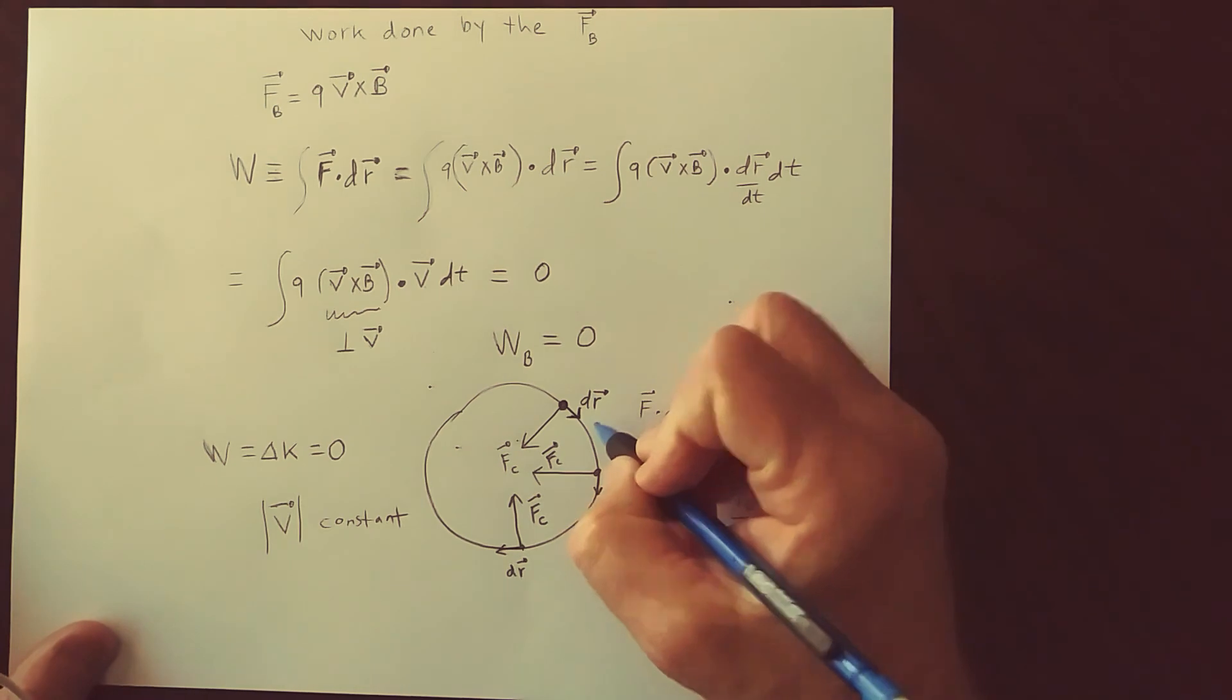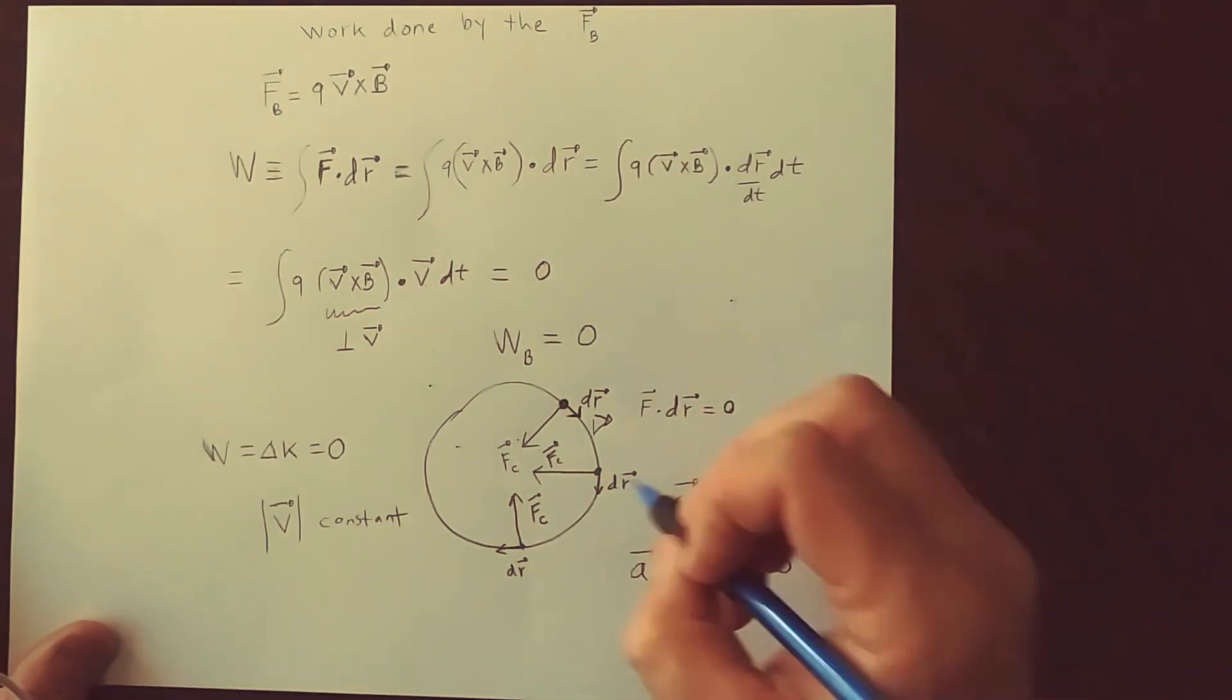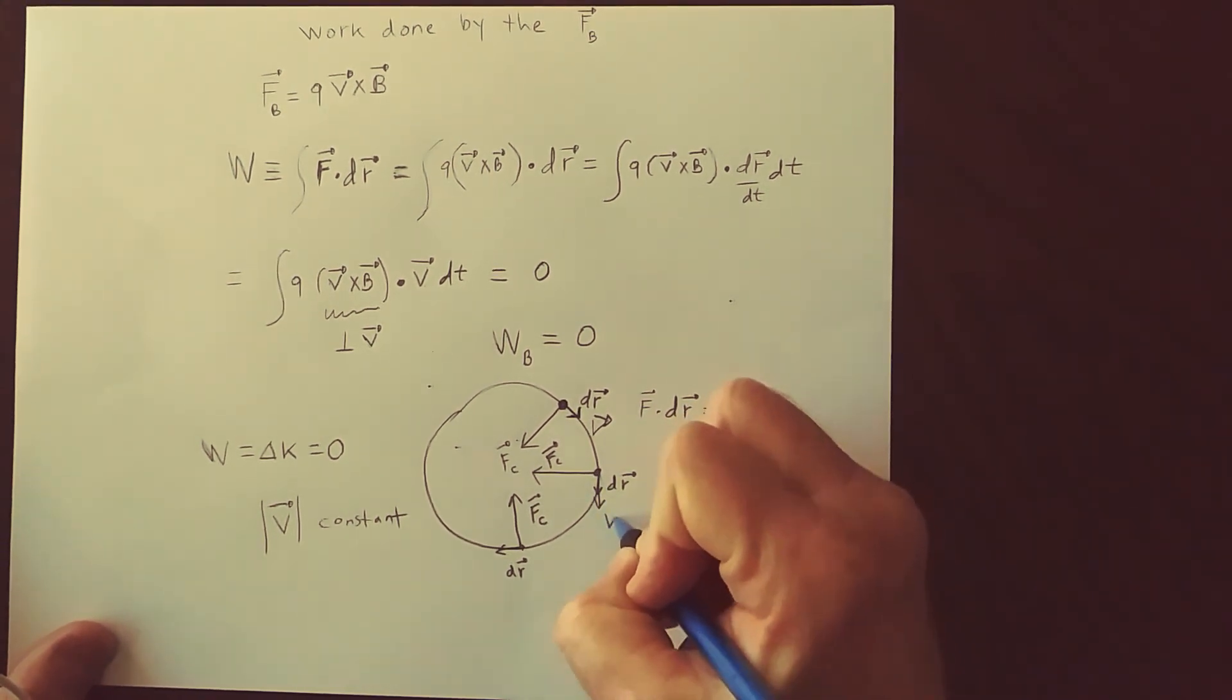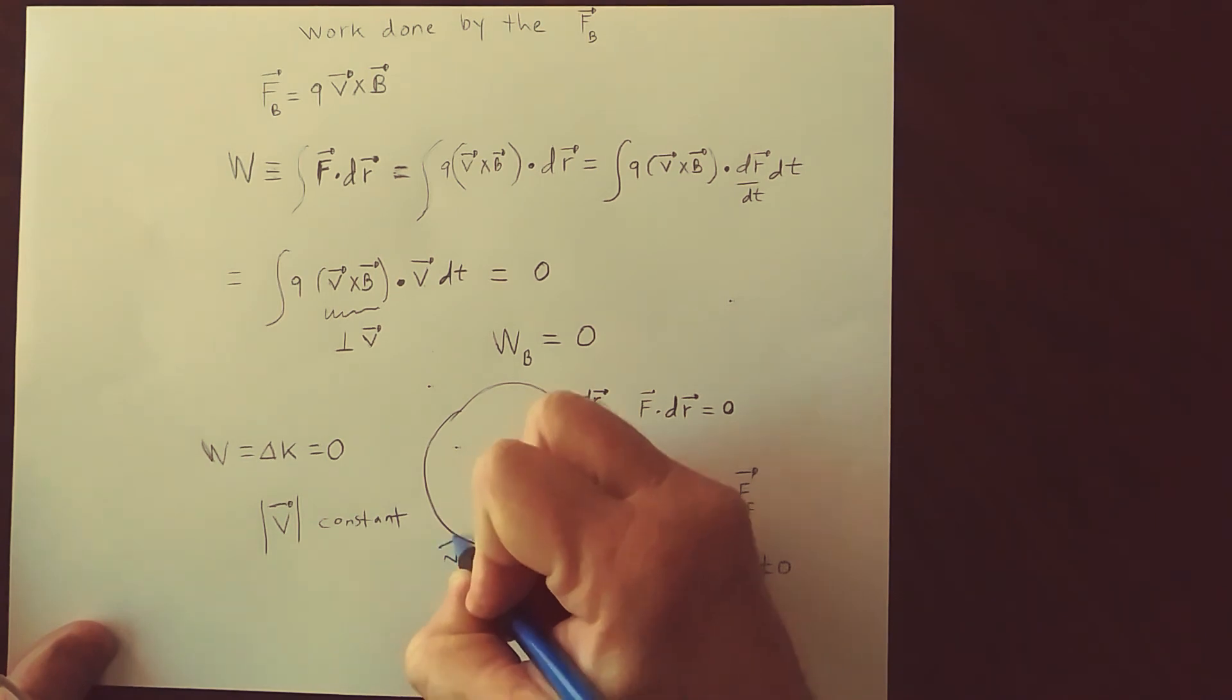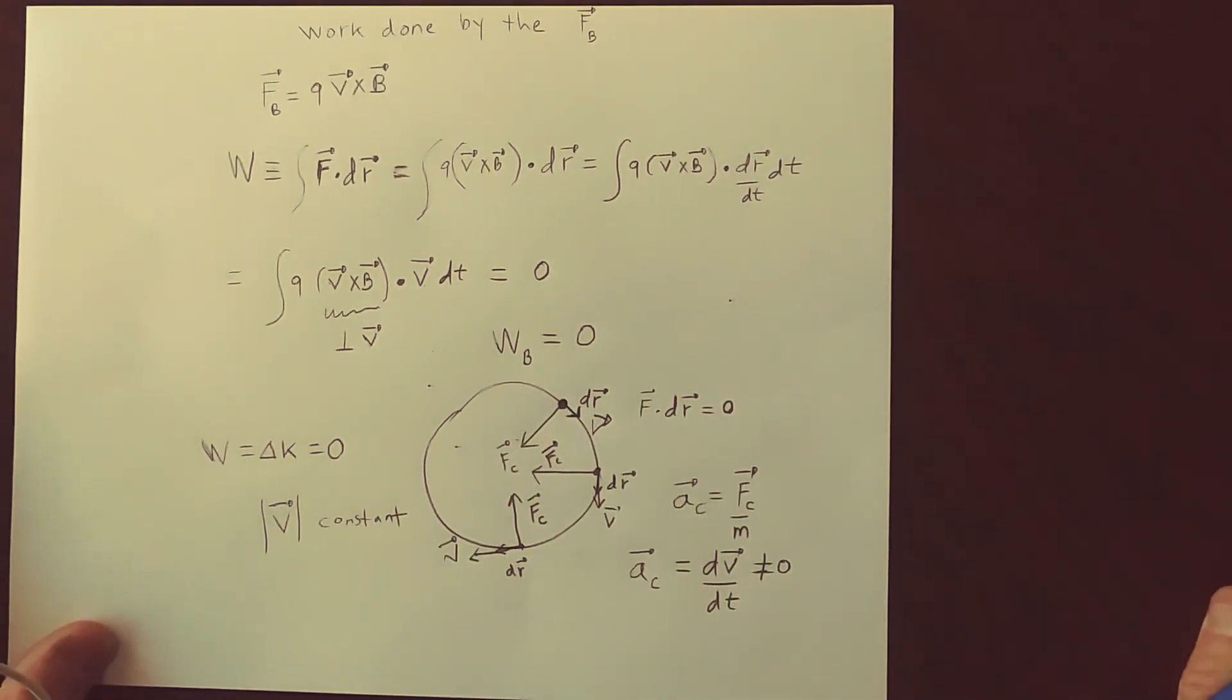And in fact, we can see the direction of the velocity, which is the same as dr, as we used up here. The velocity vector continues to change direction.